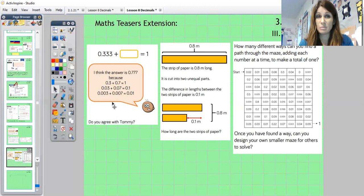If you do, can you explain in more detail why what he's done is correct? And if you don't, you need to correct him, need to explain your reasoning why he's not correct. This one here, you've got your strip of paper which is 0.79 meters long and it's cut into two unequal parts. It gives you the difference in the length between the two strips is 0.1. So how long could they be? So that's sort of using bar models again.